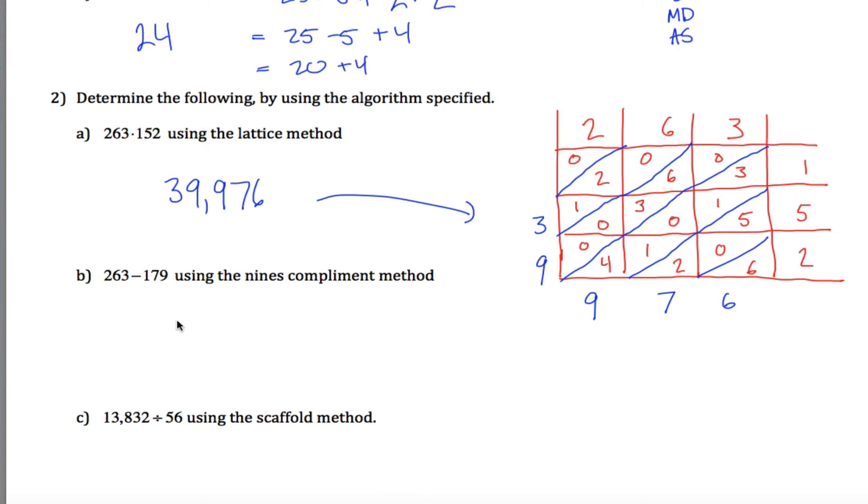263 minus 179 using the 9's complement method. Okay, that's kind of an odd method. I take this 263 minus 179 and I change it into a different problem. I leave the 263 alone, but I change it to addition. And so instead of subtracting 179, I'm going to add 820. Where did that 820 come from? Well, 8 is the 9's complement of 1, 2 is the 9's complement of 7, and 0 is the 9's complement of 9. Now I'm going to add these numbers up. 3 plus 0 is 3, 6 plus 2 is 8, 2 plus 8 is 10. And now I'm going to take this 1 right here and add it to this 3 right here. So what I'd have left would be 0, 8, 4. In other words, 84.